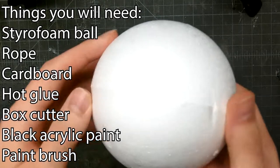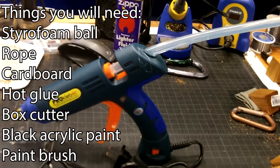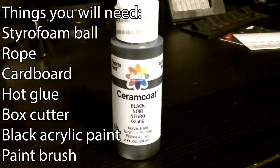Today we'll be making a pirate bomb. These are the things you'll need: a styrofoam ball, rope, cardboard, hot glue, box cutter, black acrylic paint, and a paintbrush.